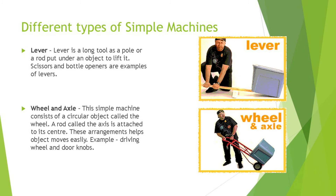The second type is wheel and axle. This simple machine consists of a circular object called the wheel, and a rod called the axle attached to its center. This arrangement helps objects move easily. Examples include the driving wheel and door knobs. In a car, the two front wheels are attached by a rod known as the axle, and with the help of the axle the wheel moves in its place.